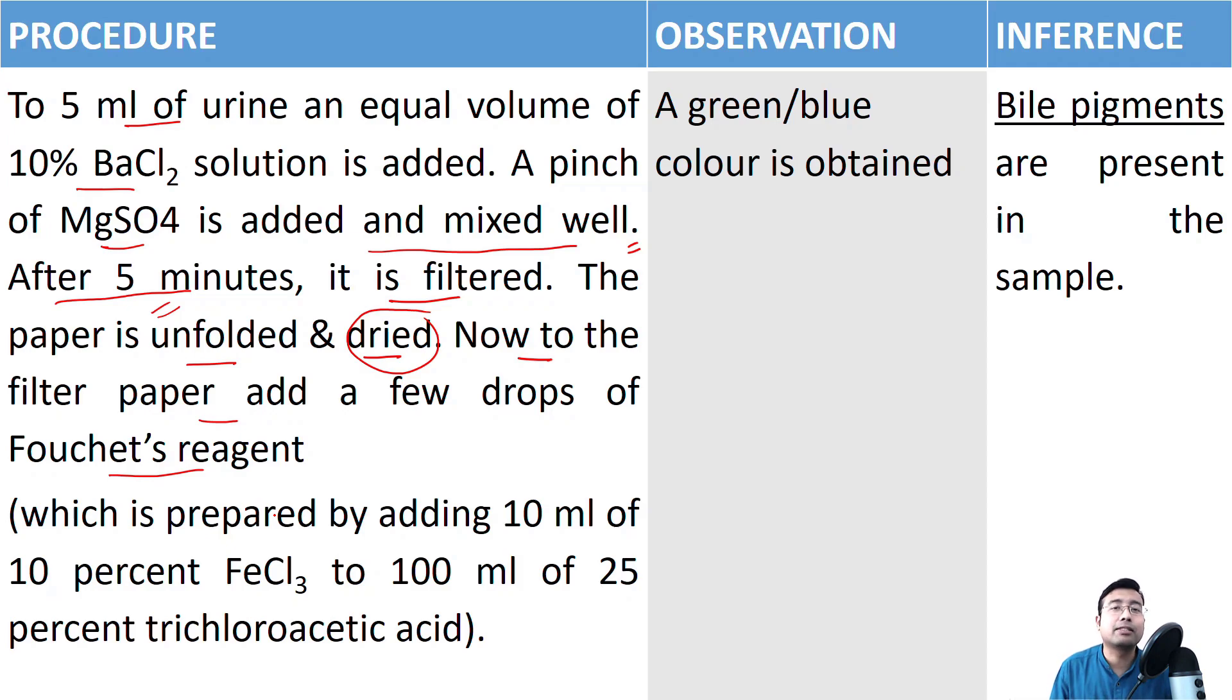Few examiner may ask you what is present in the Fouchet's reagent or how it is prepared. We are providing this. So Fouchet's reagent is actually prepared by adding 10 ml of 10% ferric chloride to 100 ml of 25% TCA, that is trichloroacetic acid. This line is specifically for academic purpose. Even if you don't mention this in the procedure, you are absolutely fine. But know this, TCA and ferric chloride, these are present in Fouchet's reagent.